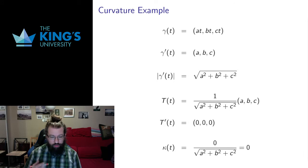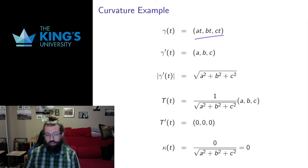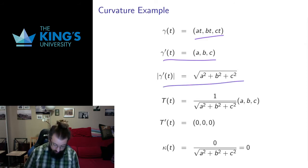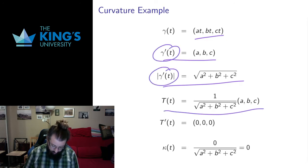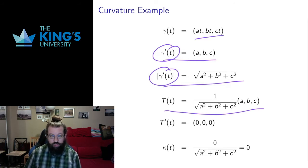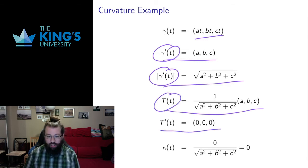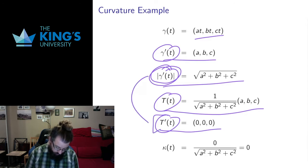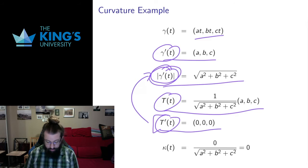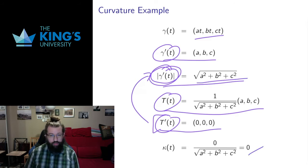Let me give some examples. Here is a straight line in three dimensions moving in some fixed direction (a, b, c). Its tangent direction is just (a, b, c) and its speed is fixed. The unit tangent T is constant, so if I differentiate it I get 0. The curvature is the length of that derivative divided by the length of the tangent — which is 0 divided by something, still 0. The curvature of a straight line is 0, which makes sense: a straight line should have no curvature.